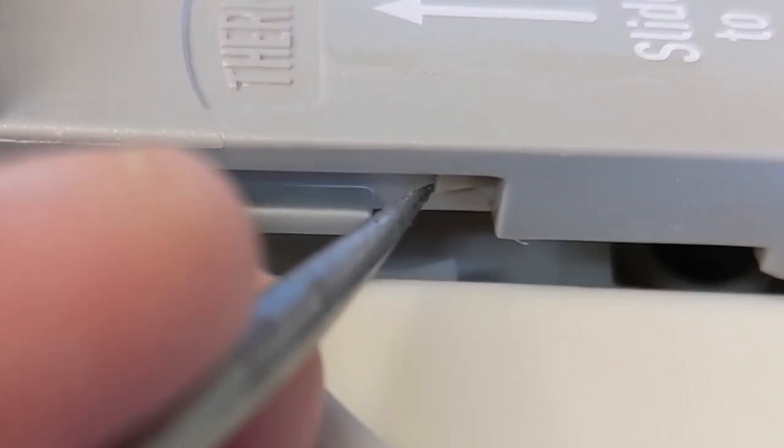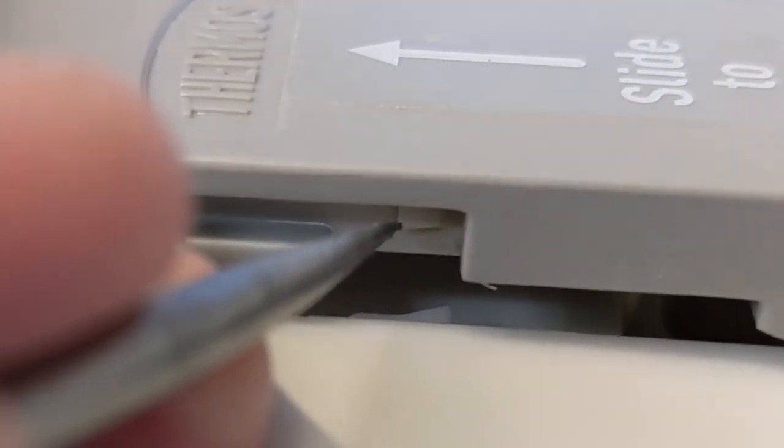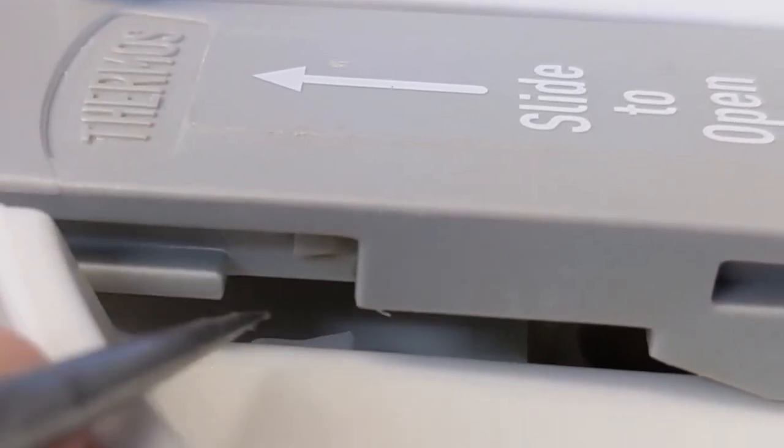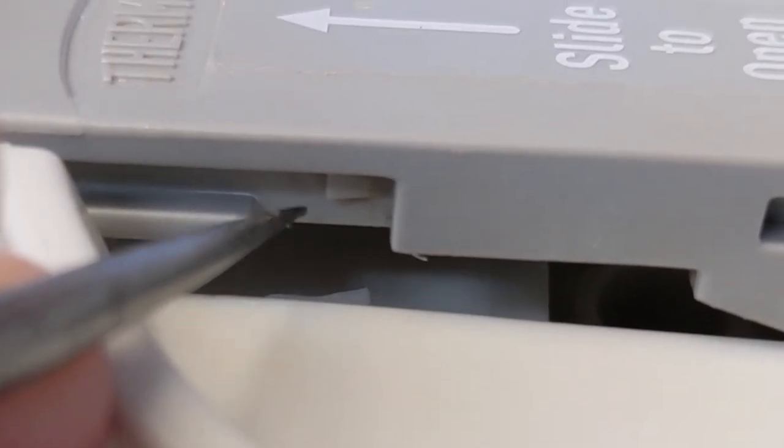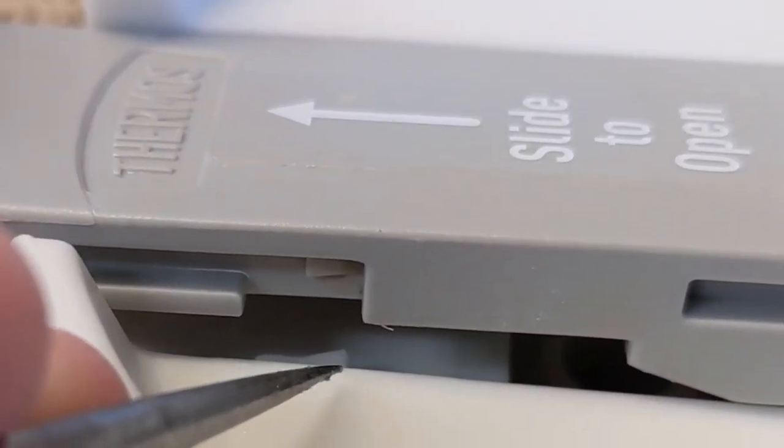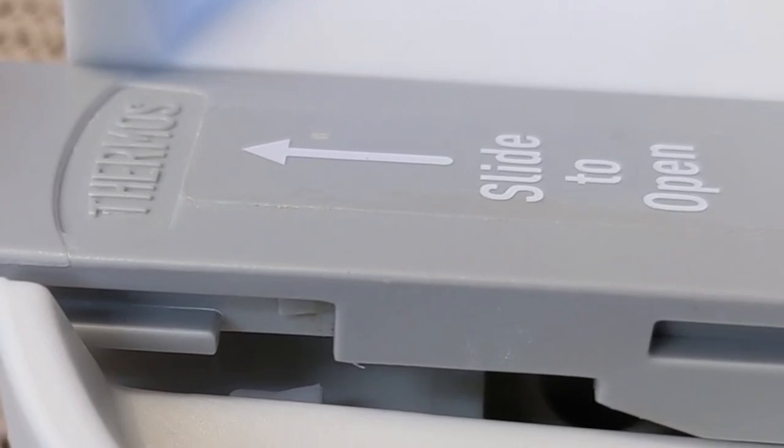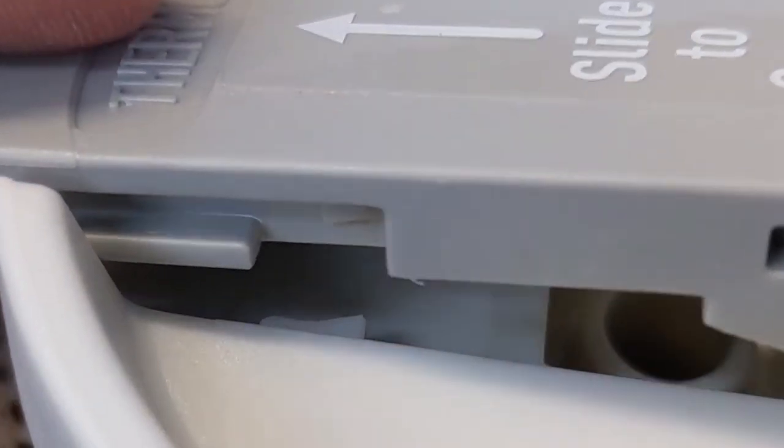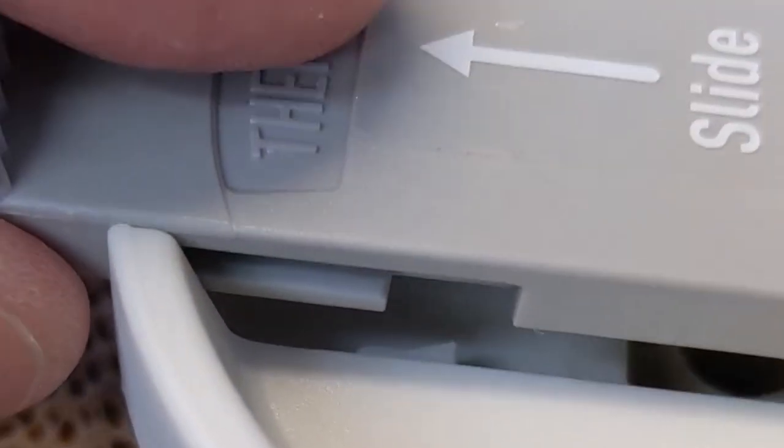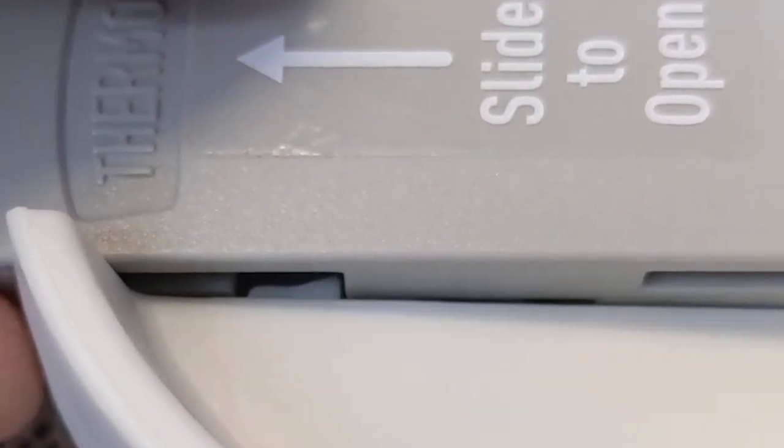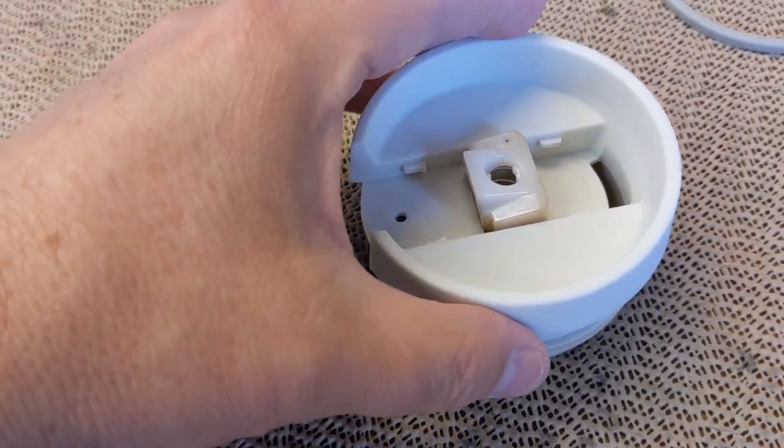Then next time when you try to open the lid, this little flat spot on the gray one will hit that flat spot on the white tab, and you won't be able to get the thing open enough. It will stop at about that location, and so you won't be able to fully retract the lid in order to lift it out.